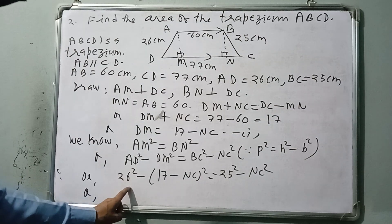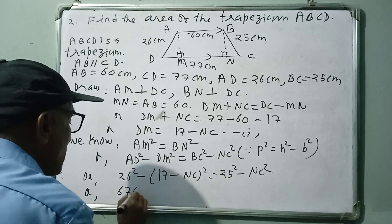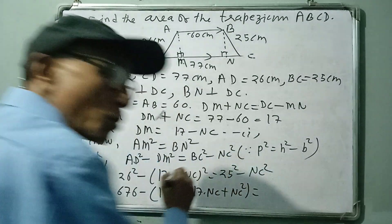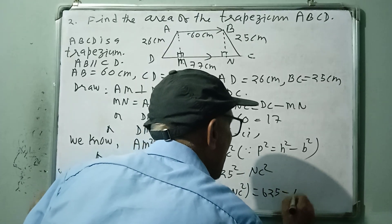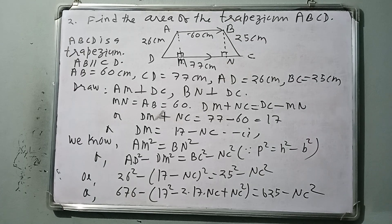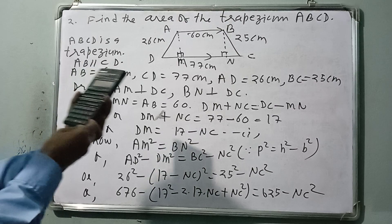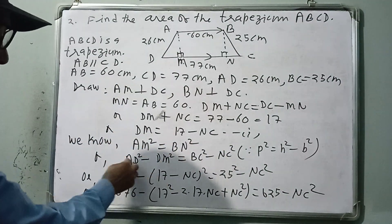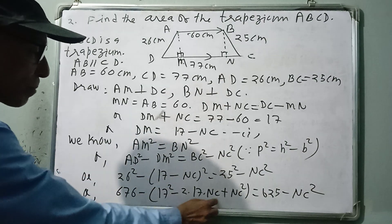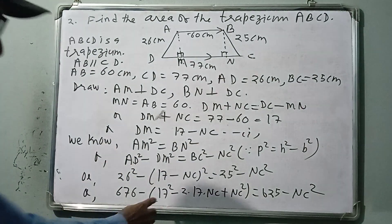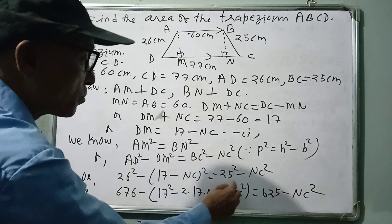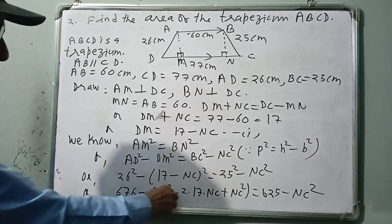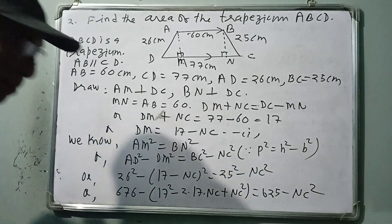Expanding: 26² = 676 and 25² = 625. We expand (17 − NC)² using the identity (a − b)² = a² − 2ab + b². So: 676 − (17 − NC)² = 625 − NC². We must use brackets carefully because there is a minus sign in front of the expression.